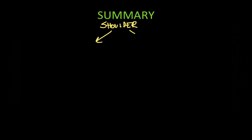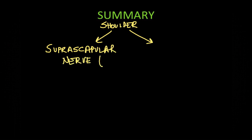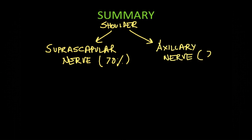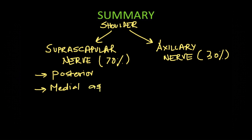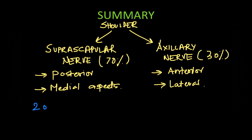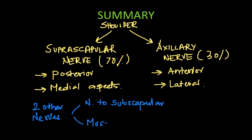To summarize, the shoulder block constitutes blocking two different nerves: the suprascapular nerve, which is responsible for most of the innervation of the shoulder joint, and the axillary nerve — note that this is the axillary nerve, not the axillary block. The suprascapular nerve innervates the posterior and medial aspects, whereas the axillary nerve innervates the anterior and lateral aspects. There are also two other small nerves which variably supply the shoulder joint: the subscapular nerves and the musculocutaneous nerve.